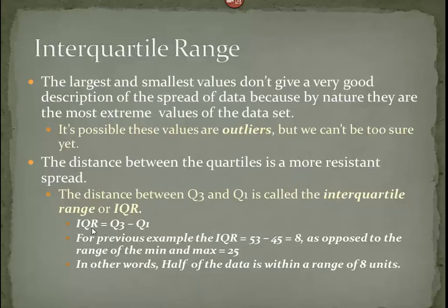The distance between the quartiles is a more resistant spread. That's because we're not picking the two most extreme values. So the distance between Q1 and Q3 is called my inter-quartile range, or IQR. In this case, in any case, we take Q3 and we subtract Q1. That gives us a number. So in our previous example for data set number 1, we would take 53 and subtract 45 from it, which would be 8. If we were to take a range of the entire set of numbers, it was 25. In other words, half of the data is in a range of 8 units, where the entire data set is within a range of 25 units.